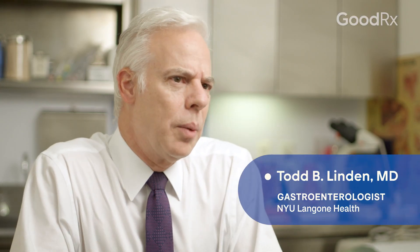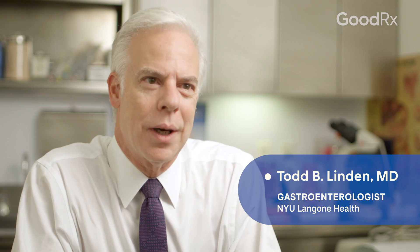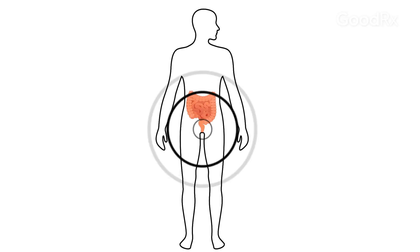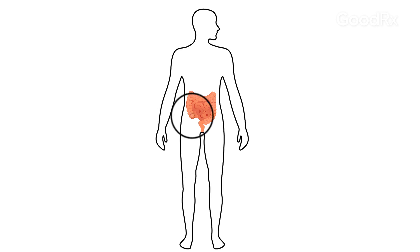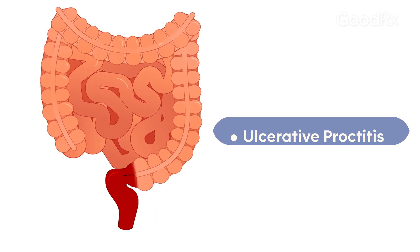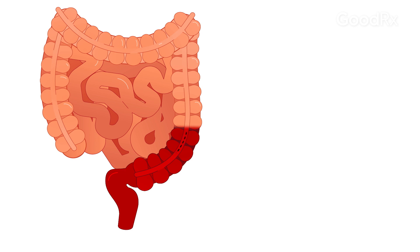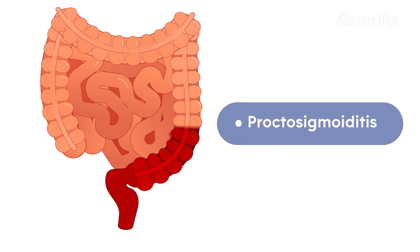Sometimes when we classify what type of colitis a patient has, we usually classify it by how extensive the involvement of their colon is. Ulcerative colitis may have distribution in different portions of the large intestines. By definition, ulcerative colitis starts at the very end of the colon and can extend farther towards the beginning by any different amount. Some people have just the rectum involved — we call that ulcerative proctitis. Some people have the rectum and then the next segment of colon involved — we call that proctosigmoiditis.